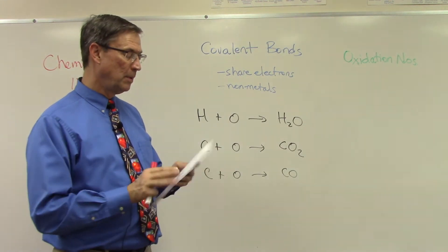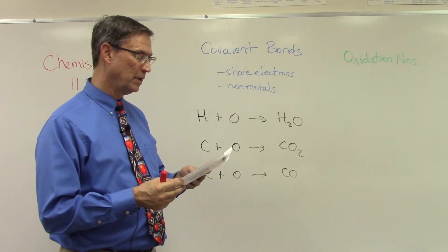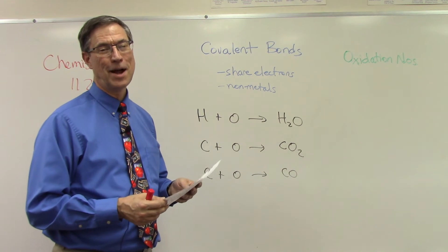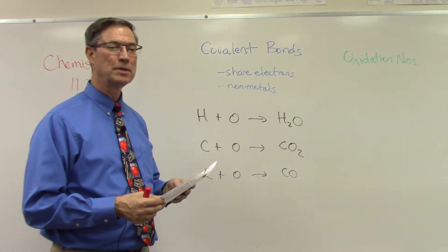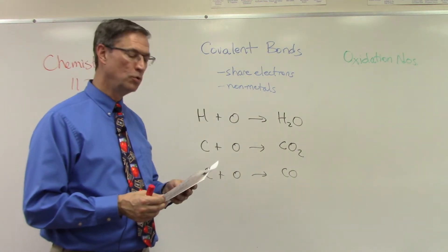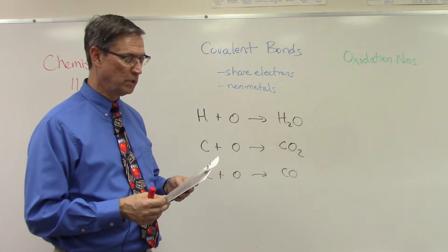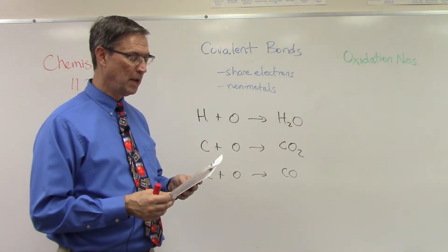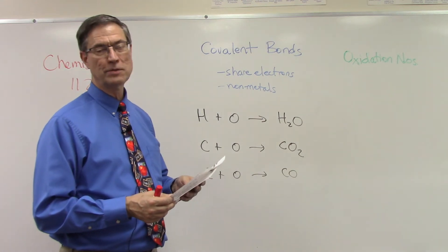But then there are some elements, like carbon or like nitrogen, that have multiple oxidation numbers. Sometimes they're positive, sometimes they're negative, sometimes it's two or four. Nitrogen has a whole bunch, doesn't it? Could be two, four, five, or positive or negative three. Wow, lots of choices.